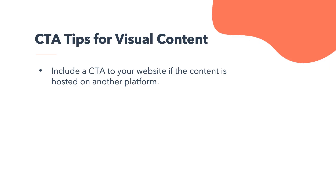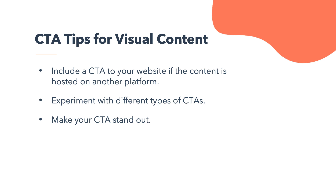You should also include a CTA to your website if the content is hosted on another medium, like videos on YouTube or infographics on social media. Directing users back to your website will help support them through their buyer's journey and convert them into a contact. Experiment with different types of CTAs — visual and verbal — and test to determine which works best. Make your CTA stand out: overlaid text or buttons shouldn't blend with the background, and consider animations, sound effects, or contrasting colors and fonts.